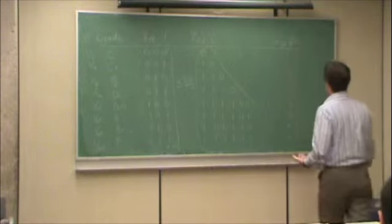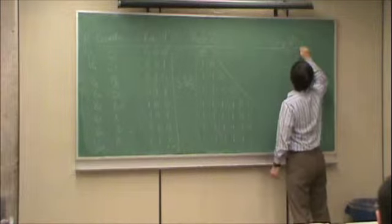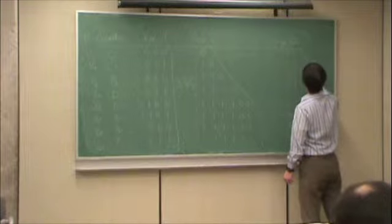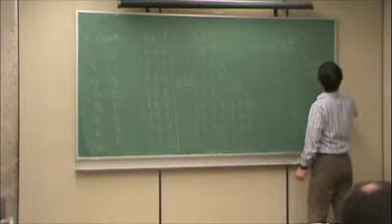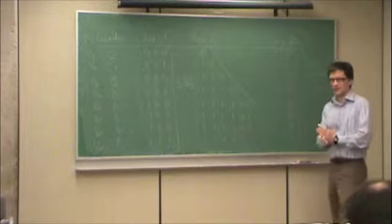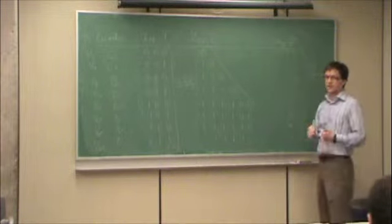So, we're going to call this quantity self-information. In other words, it's probably better to think of it as if I have a source and I want to represent it efficiently, then this is the number of bits that I should spend encoding each message.